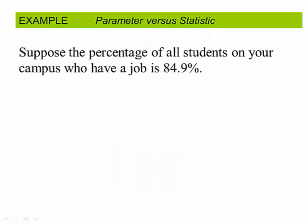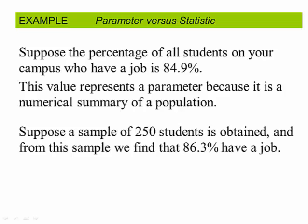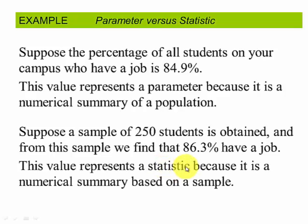Let's look at an example. Suppose the percent of all students on your campus who have a job is 84.9%. Is that a parameter or a statistic? It is a parameter because it is a numerical summary of a population — the keyword here is 'all.' Suppose a sample of 250 students is obtained and from this sample we find that 86.3% have a job. That is a statistic because it is measuring something about a sample.